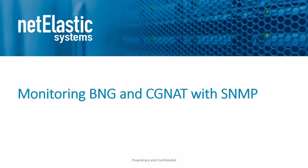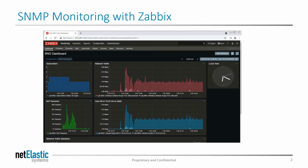Hi, and welcome to another video in our video demo series. Today we're going to be looking at monitoring Netelastic BNG and CGNAT router using SNMP. For today's demo, we're going to look at using SNMP monitoring using the open source tool Zabbix. It's very popular and common out there and very powerful, although we do support any SNMP monitoring tool that you may already have in your network.